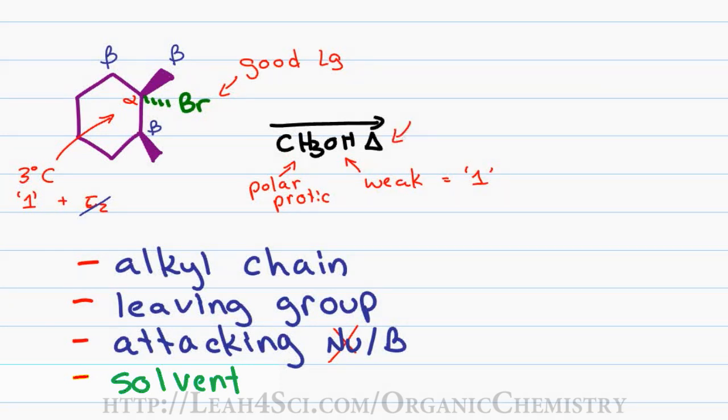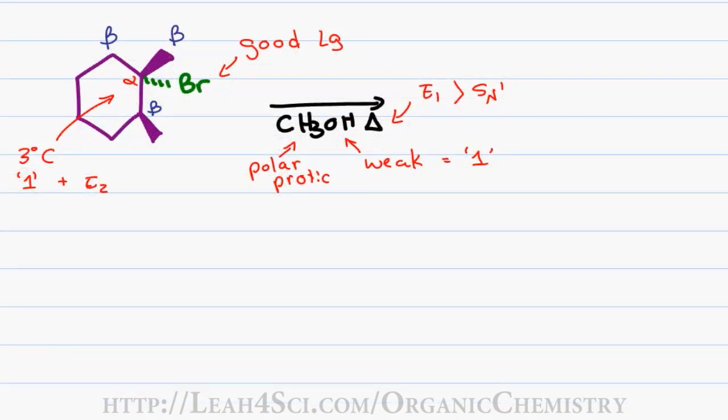The addition of heat for a 1-type reaction helps favor elimination over substitution. So even though we're going to have both SN1 and E1 take place, we'll say that E1 will be favored over SN1. We've determined that an E1 reaction can take place, so let's try to predict the product and then work through the mechanism.